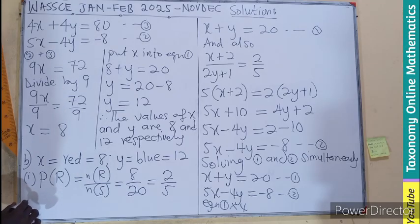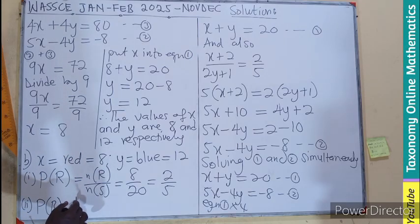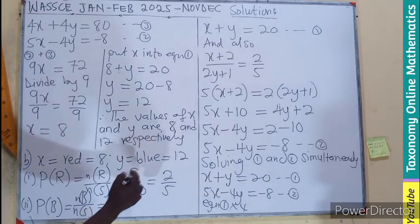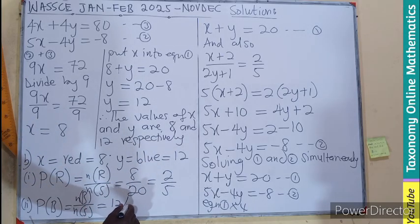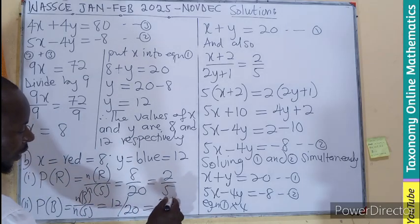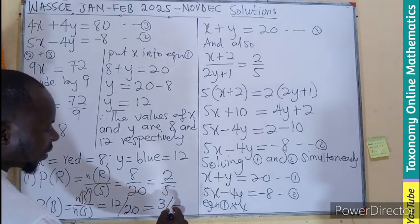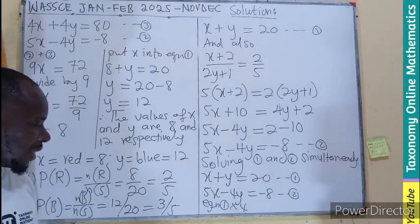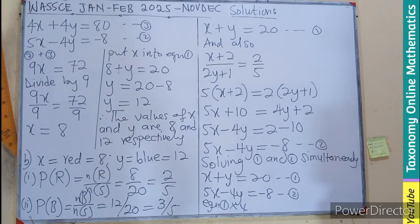Let's see the second one. Probability of blue equals number of blue over total sample space. The number of blue is 12, so 12 divided by 20. Dividing by 4 gives 3 over 5. And when we add 2/5 and 3/5, we get 1, which confirms our answer.